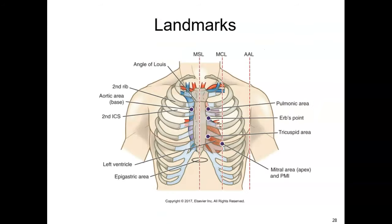Here are the landmarks for listening to heart sounds: the aortic valve, pulmonic, Erb's point, the tricuspid area, and the mitral area, which is the apex and the point of maximal impulse (PMI). A helpful mnemonic is 'All People Enjoy Time Magazine' — aortic, pulmonic, Erb's point, tricuspid, and mitral. The PMI should be felt at the intersection of the 5th intercostal space and the left midclavicular line. If found elsewhere, it could indicate cardiac enlargement such as left ventricular hypertrophy (LVH).